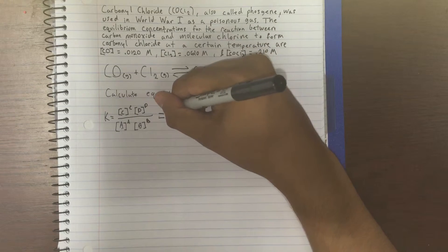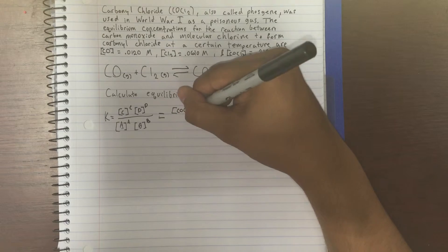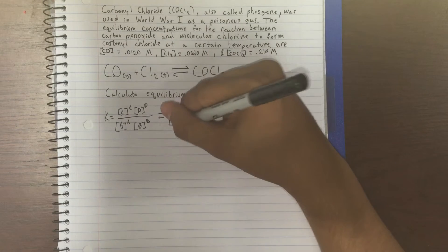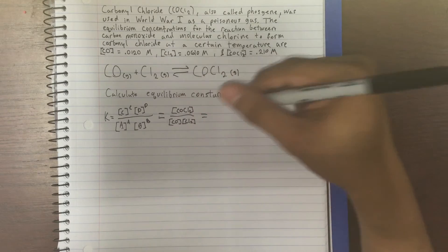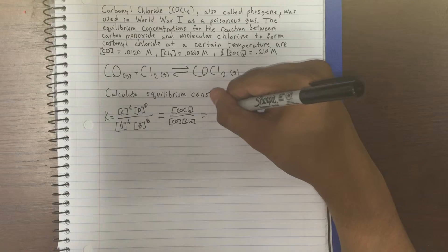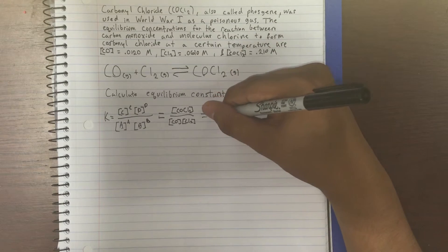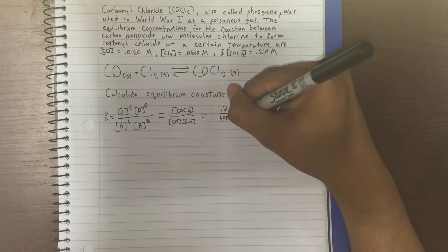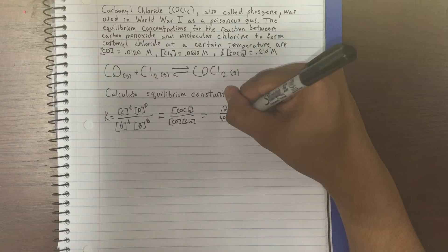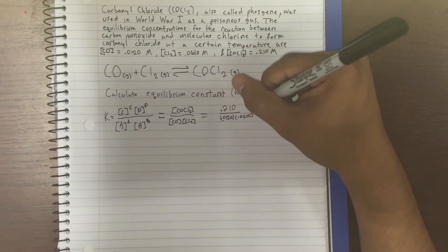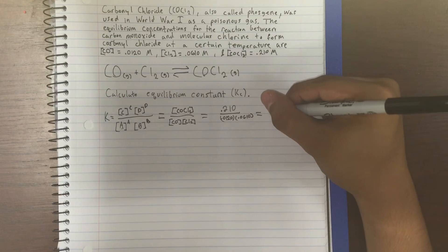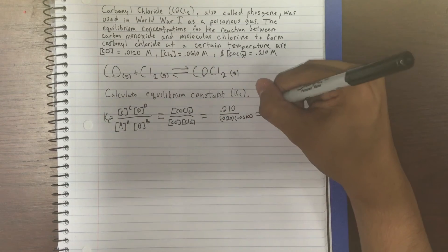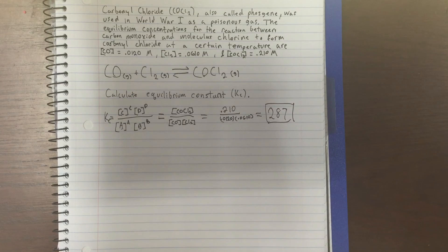So it'd be products over reactants: concentration of COCl2 over concentration CO times concentration Cl2. Now let's plug in the given numbers. Our concentration for COCl2 is 0.210 molarity, over 0.0120 times 0.0610 molarity for Cl2. After all is said and done, our final Kc would be 287. And that's how you solve for Kc.